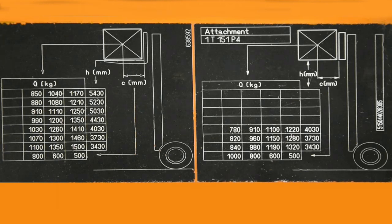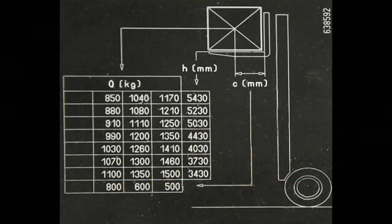The chart on the right shows you what you can do with the attachment fitted. Referring to this chart, we can see operating at a load center of 500 millimeters and up to or equal to 3.43 meters, this truck is capable of lifting 1500 kilograms.